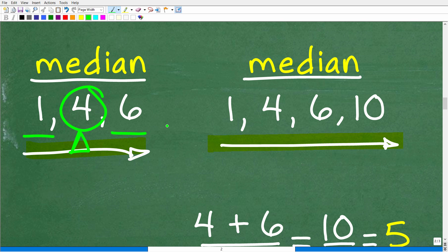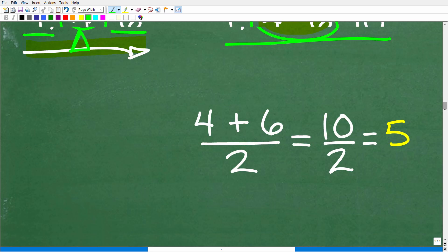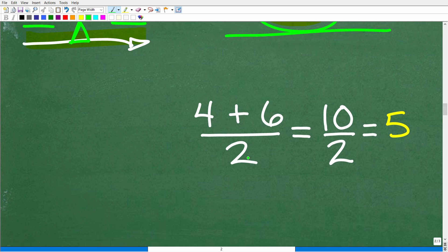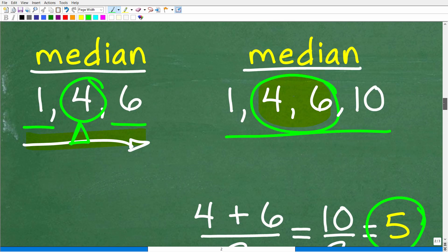So over here I have 1, 4, 6, and 10. All right, so what is the middle number? Well, we have a problem here because we don't have a particular middle number. 4 is not the middle because we have 2 here and 1 here, and 6 is not the middle because we have 1 here and 2 here. So when you have an even number of data or even number of numbers, you have to find the average between the two numbers that are in the center. So in this case, that would be 4 and 6. All right, so the average or the mean of 4 and 6 will be the median of this data set. Okay, so let's go ahead and calculate that now. So 4 plus 6 divided by 2 is going to be 10 divided by 2. So the median of this data set right here is 5.